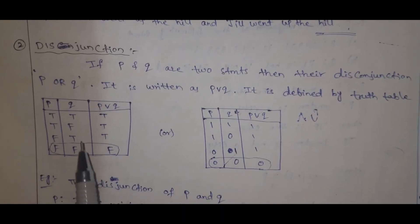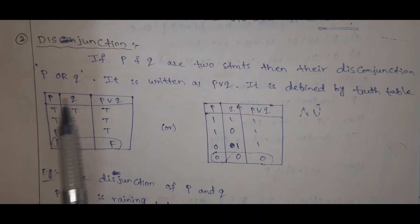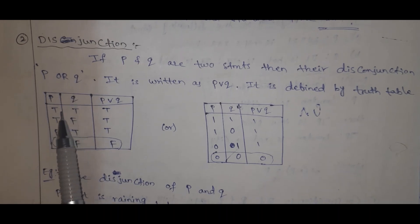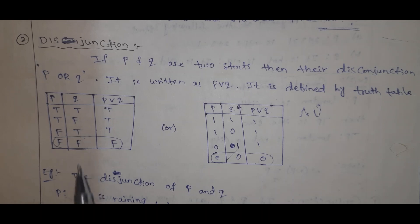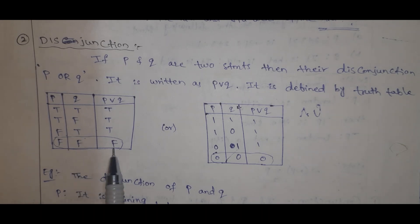For the truth table with two propositions, the rows are T-T, T-F, F-T, F-F. The disjunction P∨Q is false only when both statements are false; all remaining combinations are true.